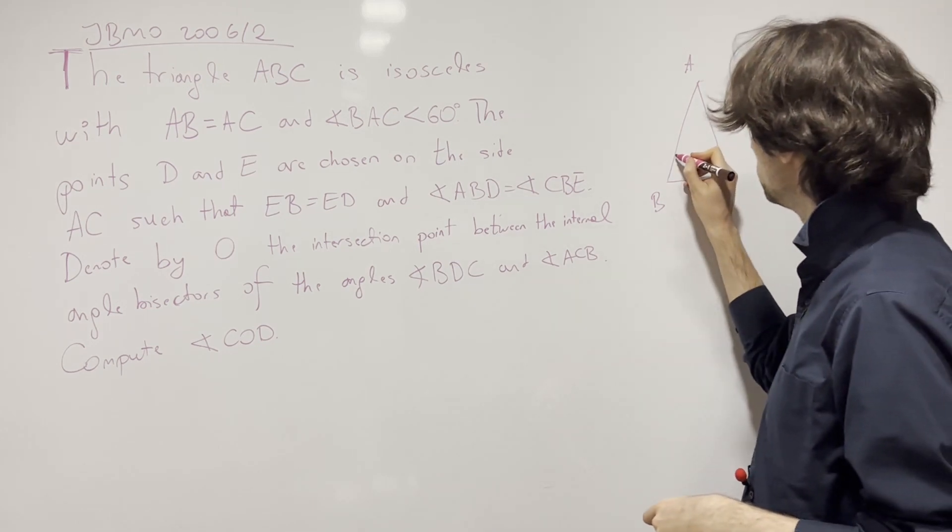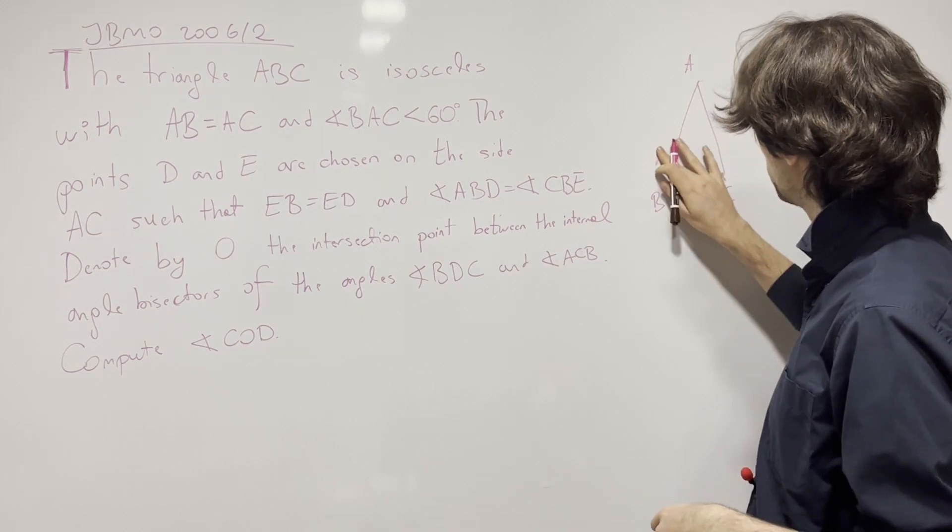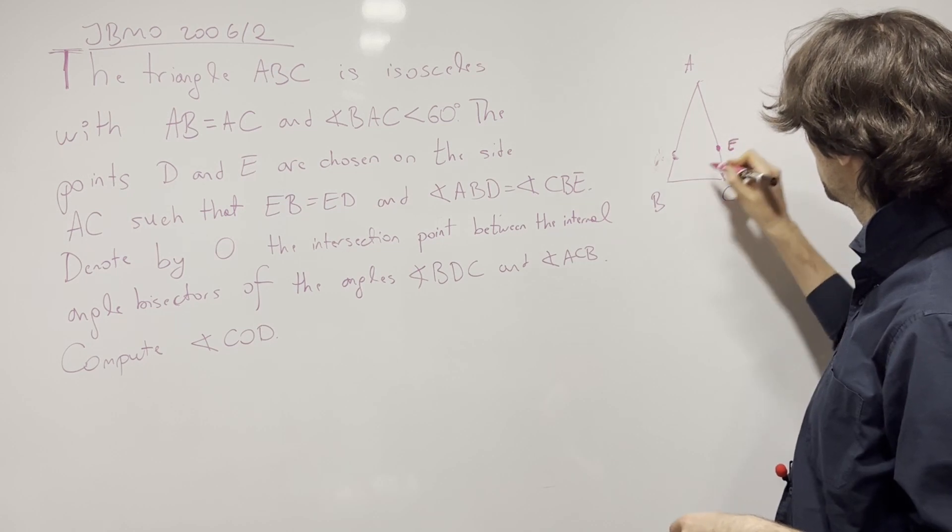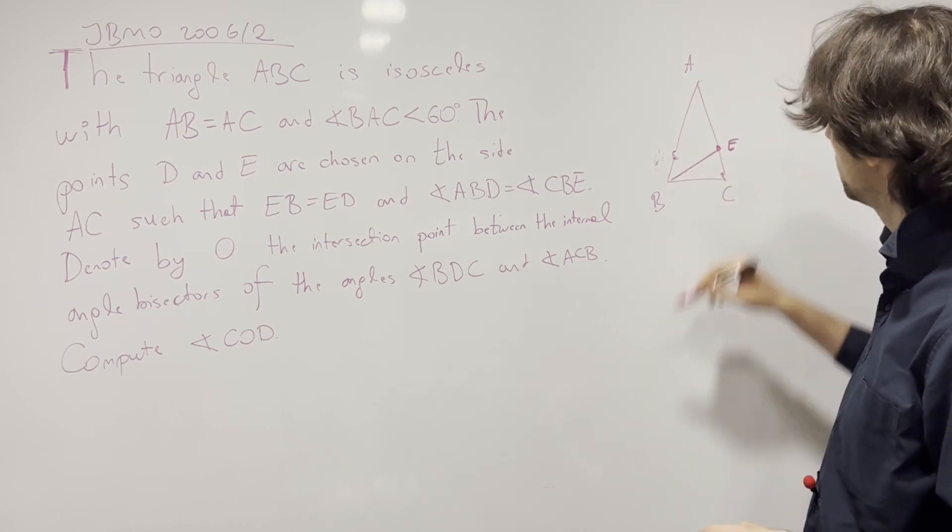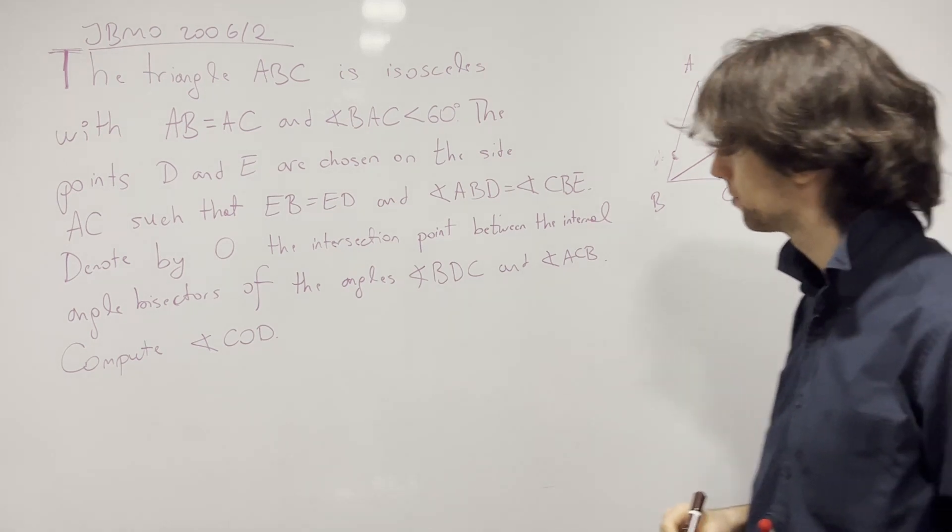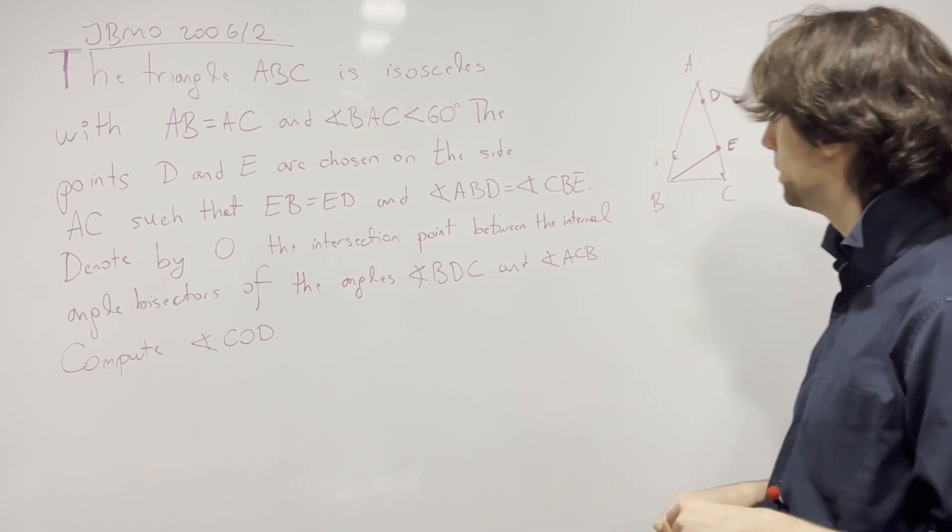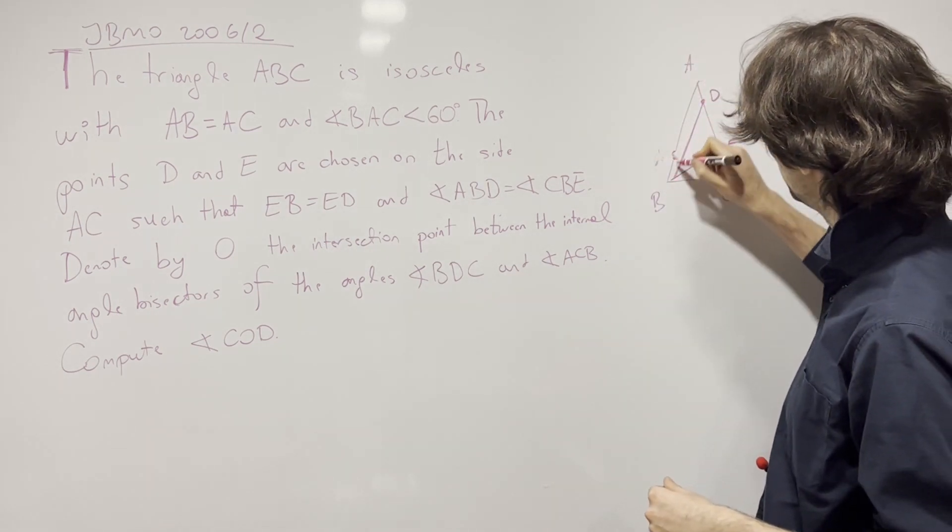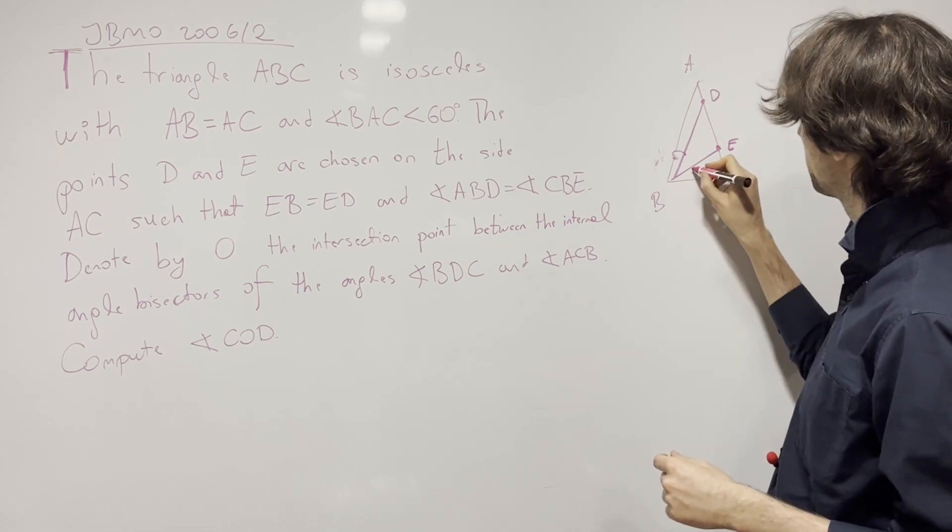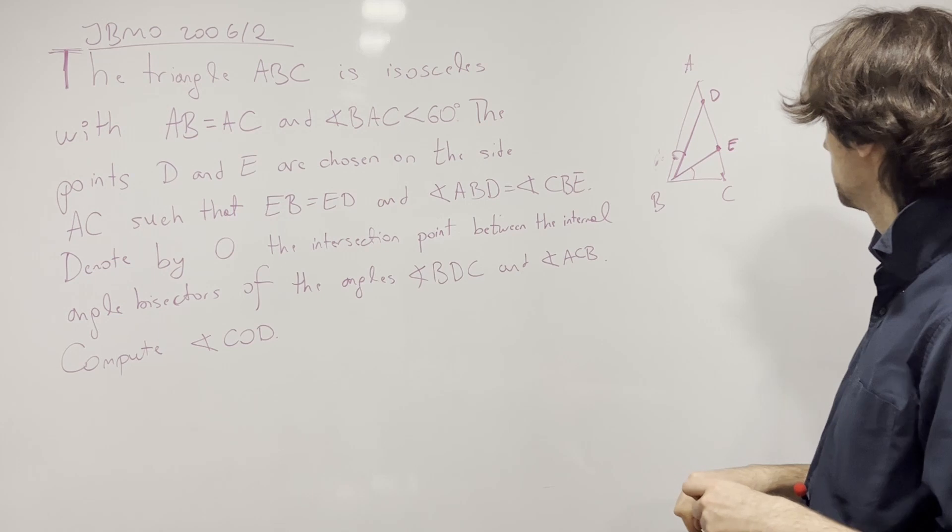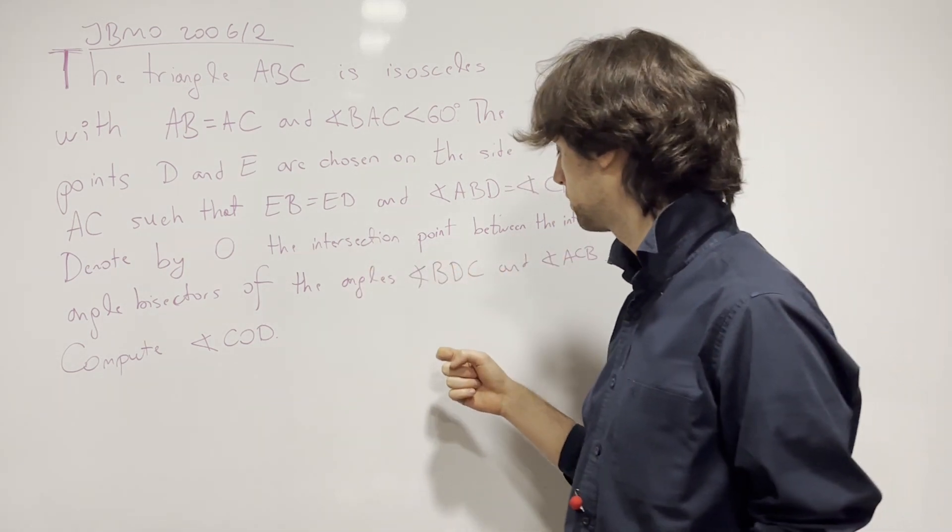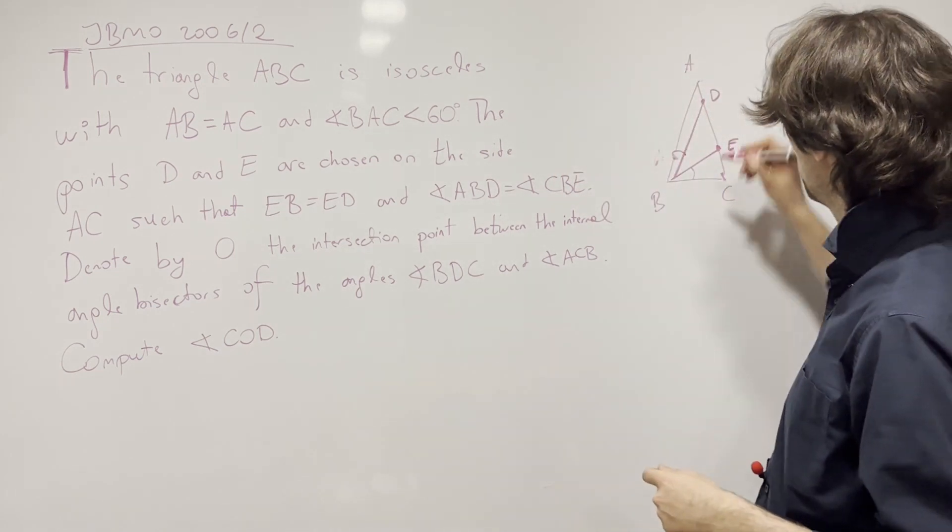So ABC and now we have D and E are on the side AC such that EB equals ED. So if I choose and angle ABD equals angle CBE.